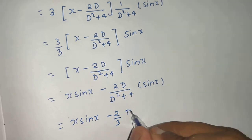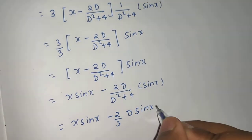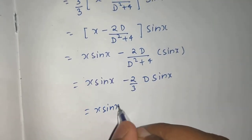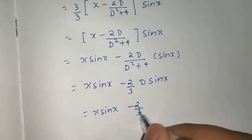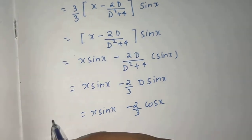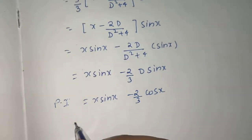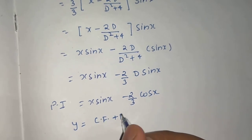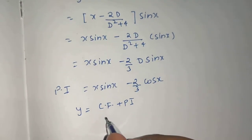x·sin(x) - 2/3, and you are left with D of sin(x), which is cos(x). So x·sin(x) - (2/3)cos(x). This is your particular integral.